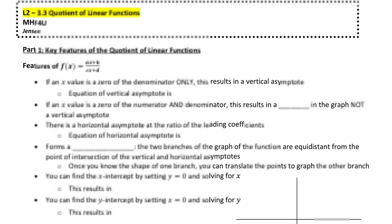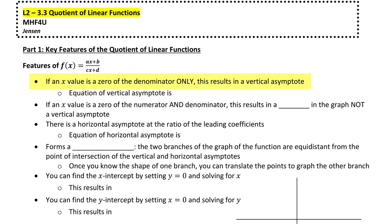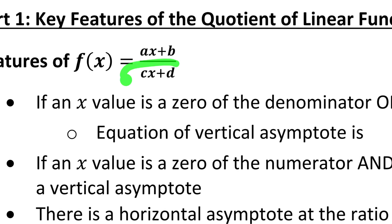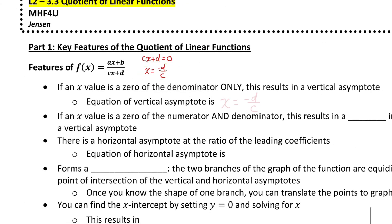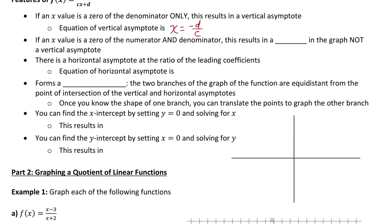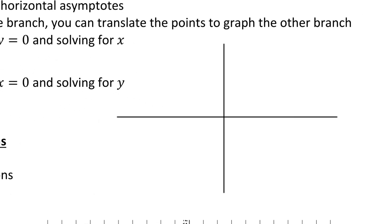For that general quotient of linear functions, if we have an x value that is a zero of the denominator only, that would result in a vertical asymptote. Division by zero is undefined. So if there is an x value that makes the denominator be zero, what would make cx plus d be zero? If I rearranged to isolate x, I would see that x equals negative d over c. So there would be a vertical asymptote at x equals negative d over c.